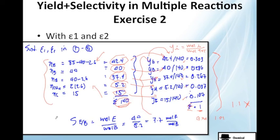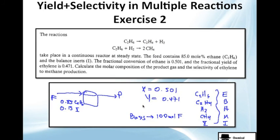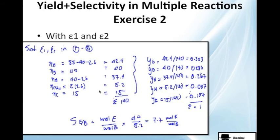And they also ask us for the selectivity of ethylene compared to methane. So, we just, the 40 is what we're getting, the ethylene compared to the methane. So, it's 40 divided by 5.2, which is 7 mol of our product compared to methane. And that's everything, guys. Hope you liked the video.